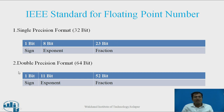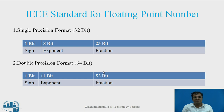Coming to double precision format, whose width is 64 bits, divided into 3 parts: sign (1 bit), exponent (11 bits), and fraction (52 bits). So these are the two formats used to represent a number.